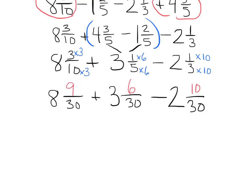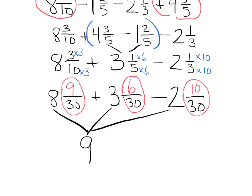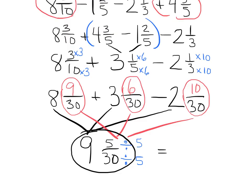And now we are free to get going on this. We could do this all in one step. We could do 8 plus 3 is 11 minus 2 gives us 9. And then let's do the fractions: 9 30ths plus 6 30ths is 15 30ths, and then 15 30ths minus 10 30ths gives us 5 30ths. So technically our answer is 9 and 5 30ths, but we want students to be able to see that that could be simplified because both the numerator and the denominator can be divided by 5.